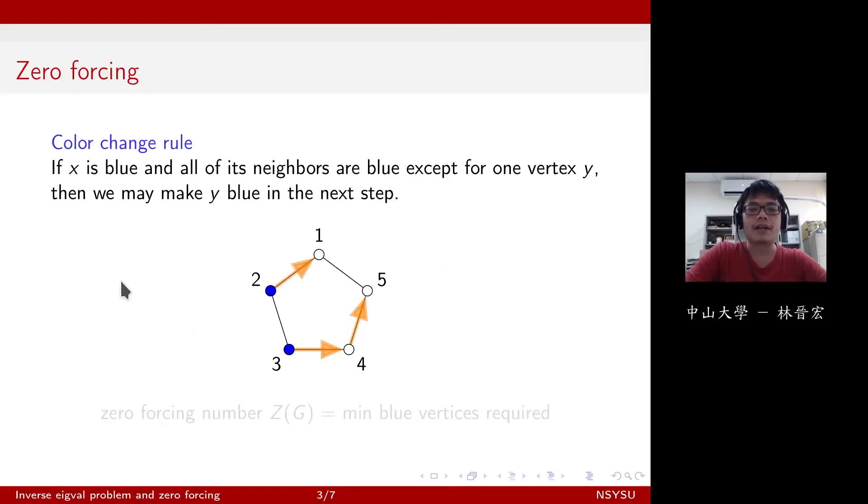So here is the color change rule. The color change rule states that we need to find a vertex x. Suppose x is blue, and all of its neighbors are blue already, except for just one. And this one can make blue in the next step. So 2 will make 1 blue, and 3 will make 4 blue, and later on 4 can make 5 blue.